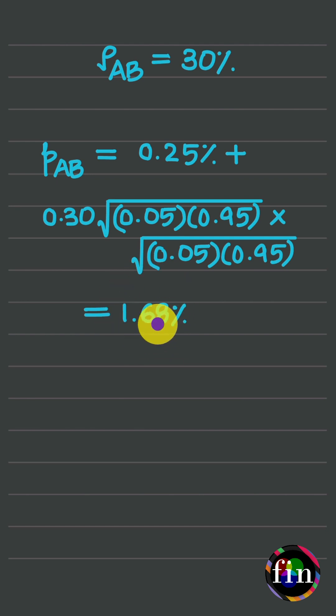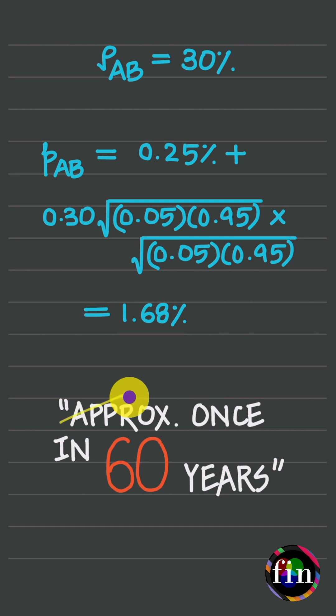This means that under the assumption of correlated defaults, both loans defaulting in the same year happens approximately once in 60 years.